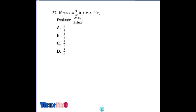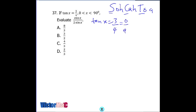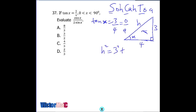The next question is on trigonometry, applying the popular acronym. The tangent of angle x is given as 3 over 4, meaning opposite over adjacent. Drawing a right triangle: angle x here, opposite is 3, adjacent is 4, hypotenuse unknown. Using Pythagoras: 3 squared plus 4 squared equals 9 plus 16, so h squared equals 25. Taking the square root, h equals 5.